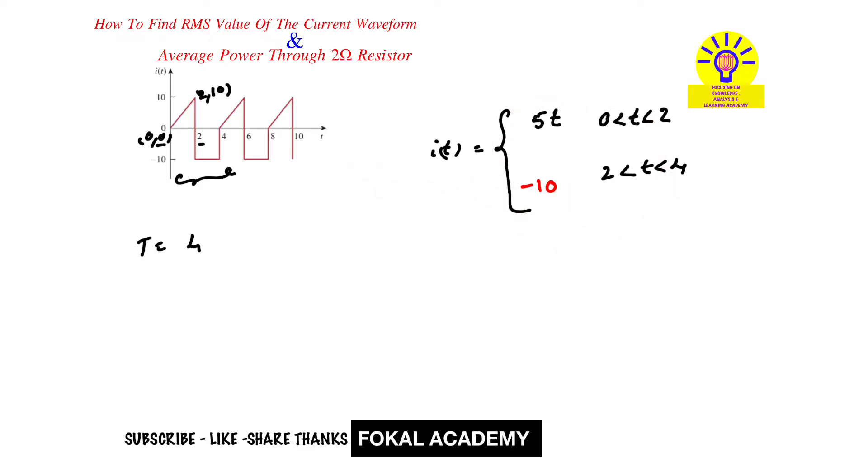Now we are going to find RMS value. So we know that i_rms equal to square root of 1 by T, integral from 0 to 4 of i(t) whole square dt.